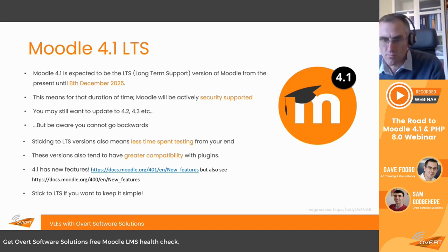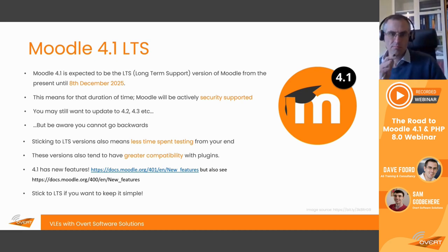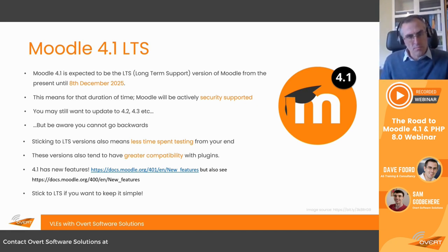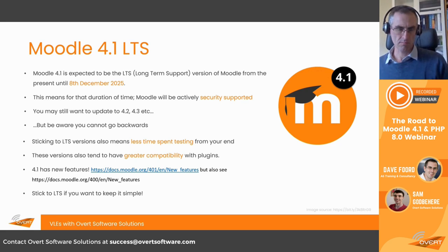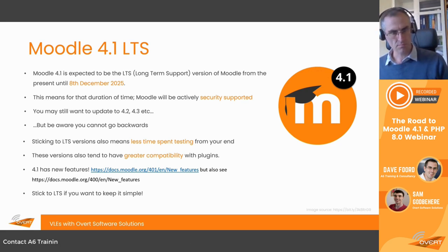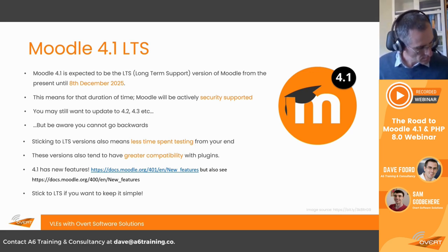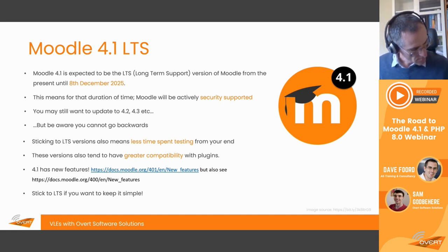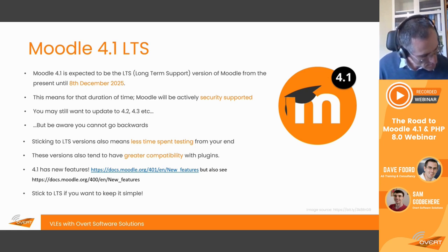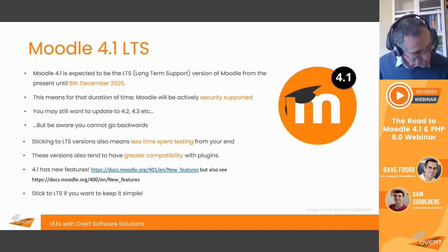On long-term support: these are the versions of Moodle which will remain compatible and security-supported for the longest. Moodle 4.1 is going to be the upcoming long-term support version, supported until December 8th, 2025. You may still want to upgrade to Moodle 4.2 or 4.3, but due to the way Moodle handles database upgrades, you won't be able to go back to 4.1 if you've already upgraded to 4.2 or 4.3 — so that's something important to keep in mind.